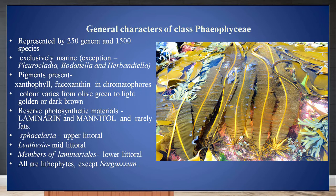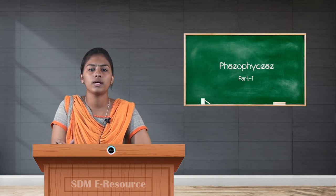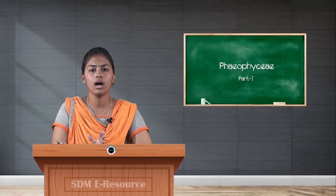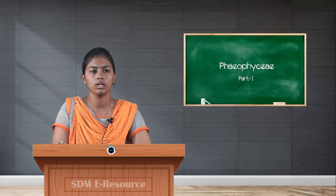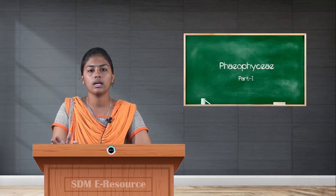The pigments present in this class of algae are xanthophyll, fucoxanthin in the chromatophores, and also chlorophyll A and chlorophyll B, but predominantly xanthophyll and fucoxanthin are found. The color of the Phaeophyceae members varies from olive green to dark brown. Reserved food materials are laminarin and mannitol.